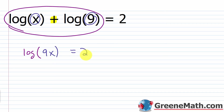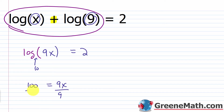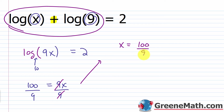Once you have it in this format, you can use exponential form. This is implied to have a base of 10, so 10 squared, or 100, is equal to 9x. Divide both sides of the equation by 9, and you'll end up with x is equal to 100 ninths as your answer.